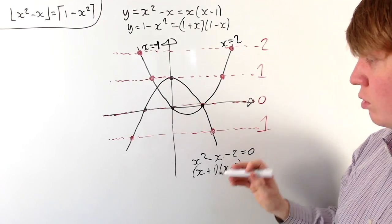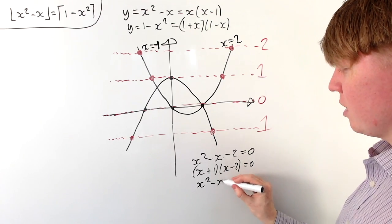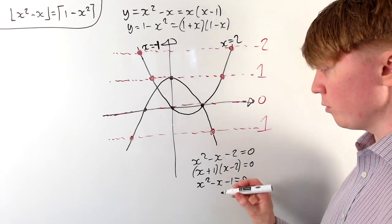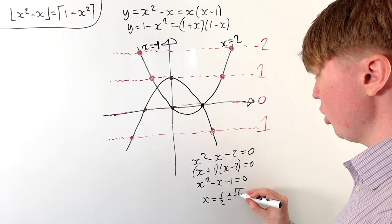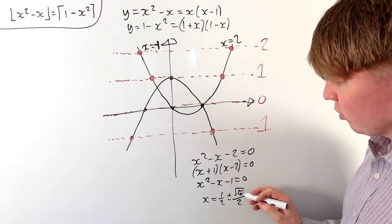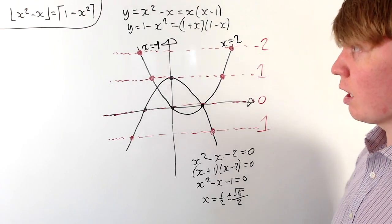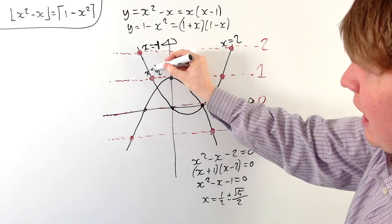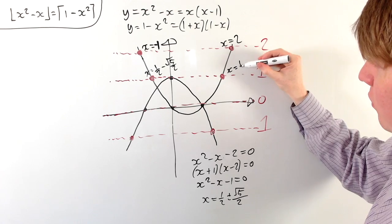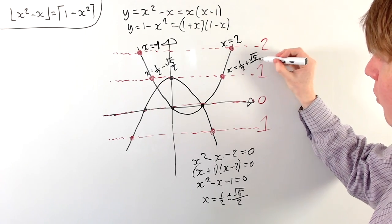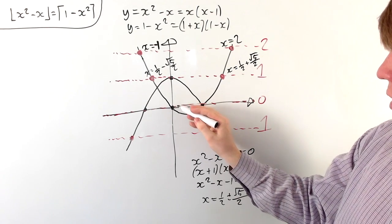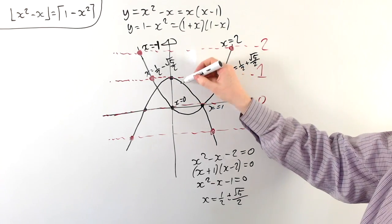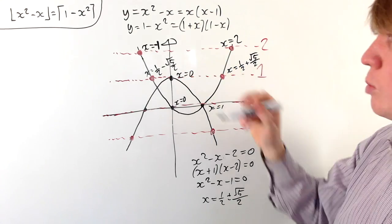Where x squared minus x equals 1: rearranging gives x squared minus x minus 1 equals 0. Using the quadratic formula, x equals one half plus or minus root 5 over 2 — one solution is actually the golden ratio. The negative solution, one half minus root 5 over 2, and the positive solution, one half plus root 5 over 2, are the x-values there. Where x squared minus x equals 0, we have x equals 0 and x equals 1.